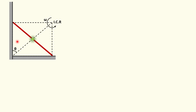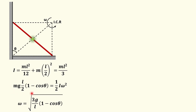The height has decreased, meaning potential energy has decreased and that potential energy has gone into kinetic energy. Since initial kinetic energy was zero, we write the conservation of mechanical energy: MgL/2·(1 − cosθ) equals ½·I·ω². Here I is about the ICR. Applying the parallel axis theorem about the center of mass gives I = ML²/12, and since the distance between axes is L/2, we get I = ML²/3. Substituting, we solve for omega.